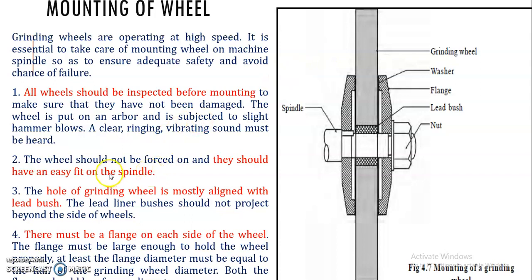Next, the wheel should not be forced onto the spindle — it must be an easy fit. Before fitting the grinding wheel on the assembly, it should easily fit onto the lead bush without forcing. The hole of the grinding wheel must be aligned with the lead bush, meaning the grinding wheel internal diameter axis and the lead bush axis must be concentric. The lead bush is hollow cylindrical in shape, as is the grinding wheel bore, so concentricity between their axes must be maintained.